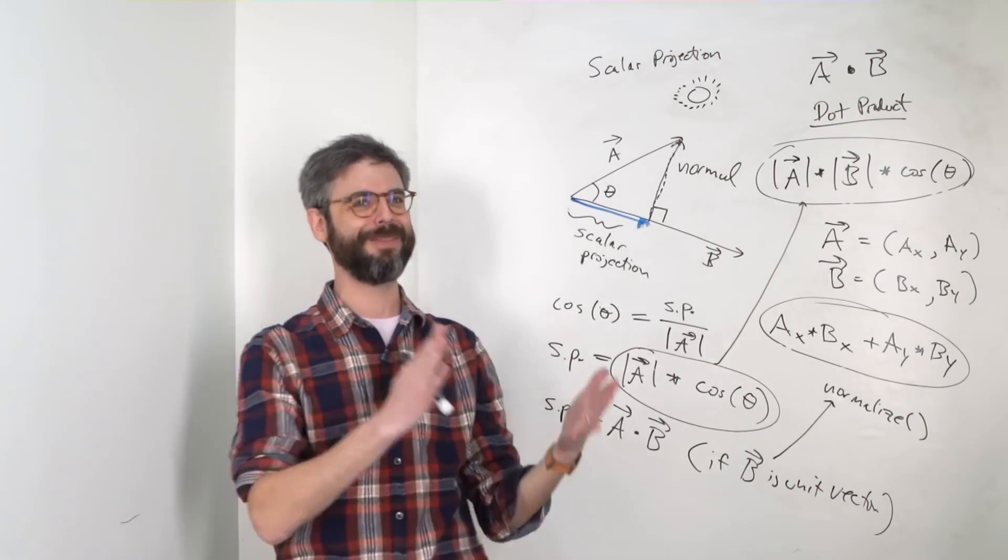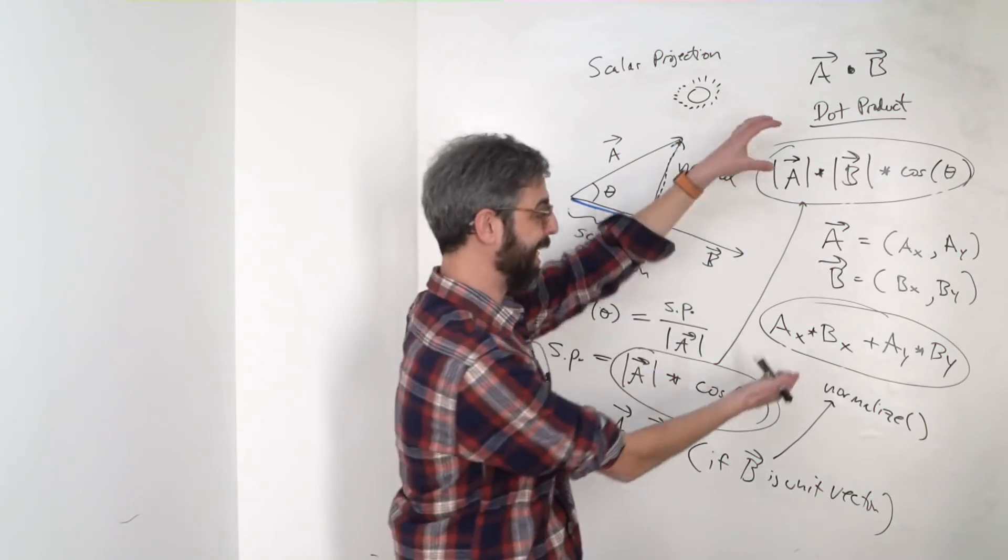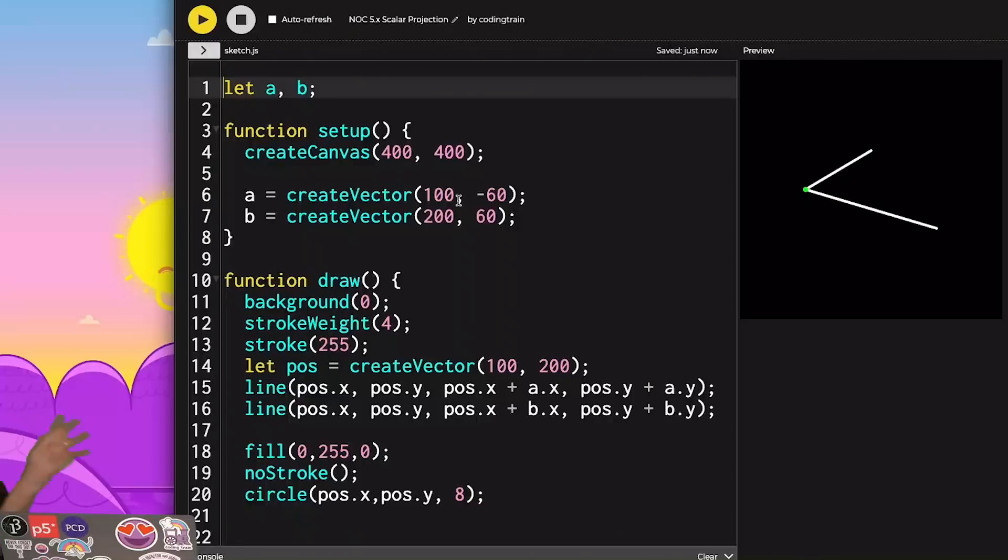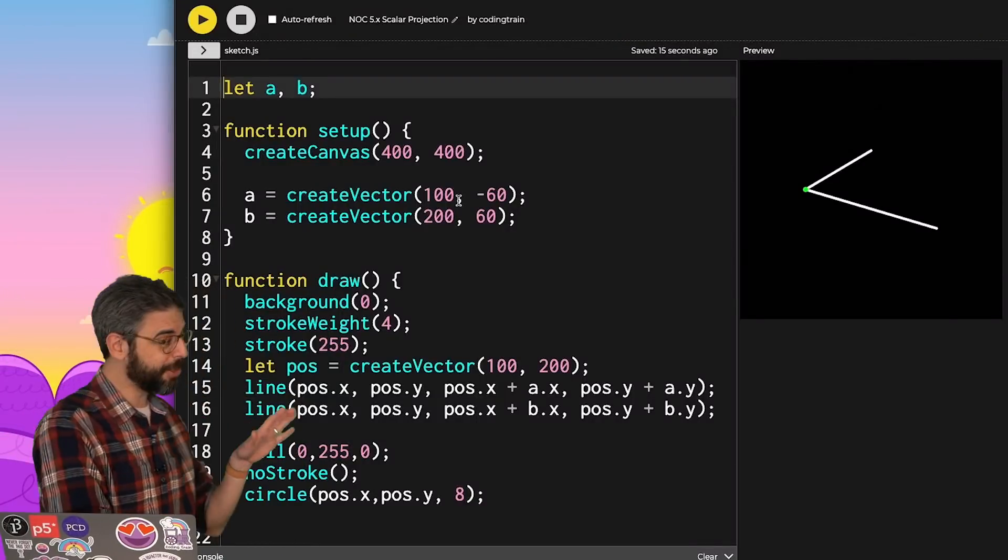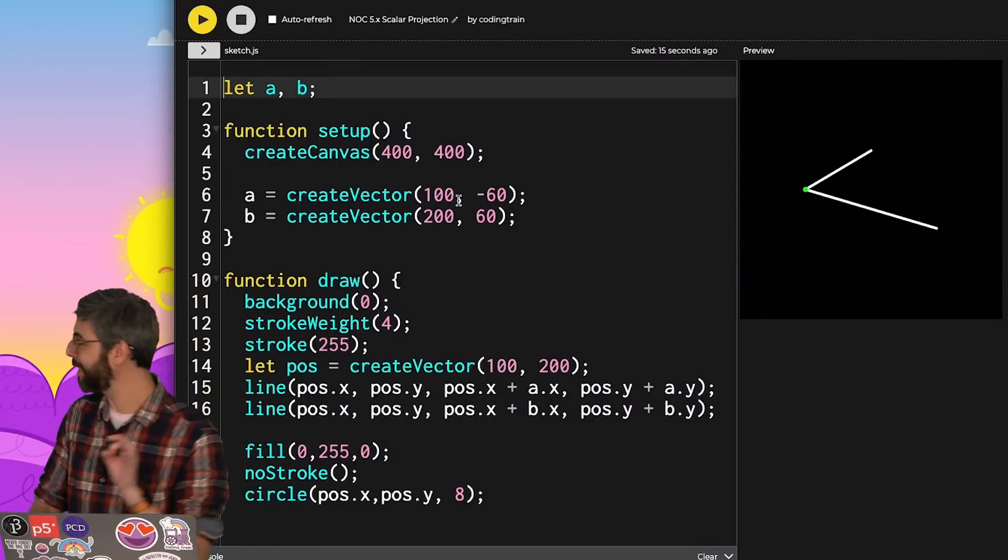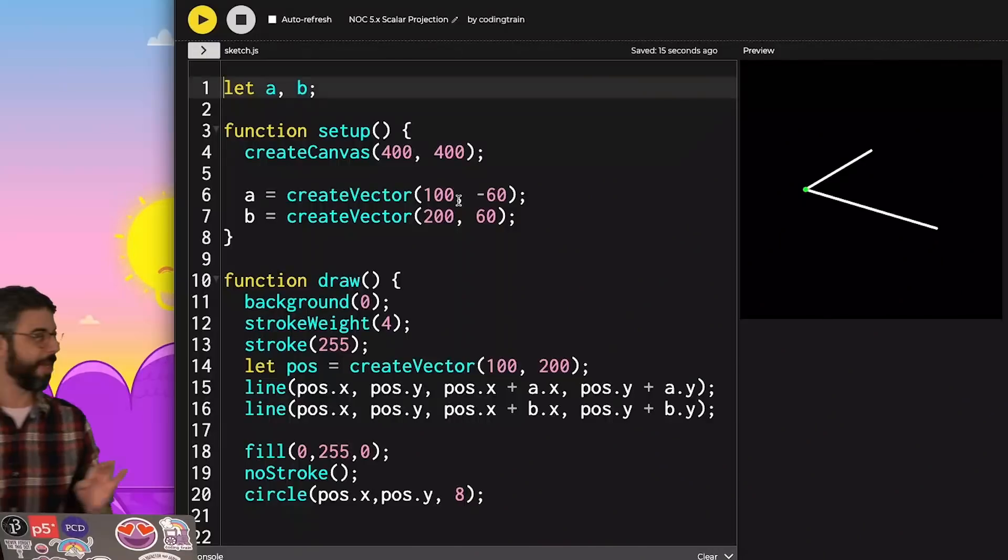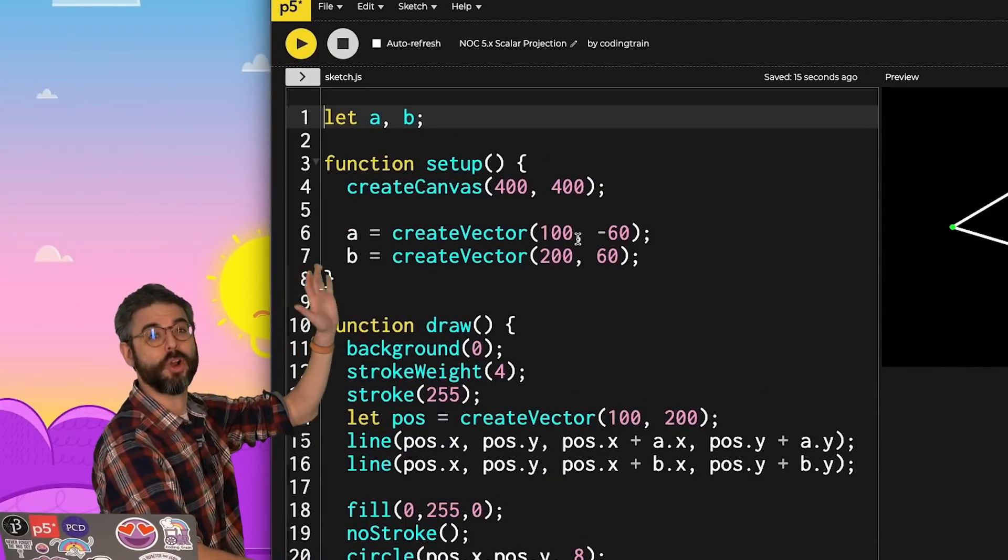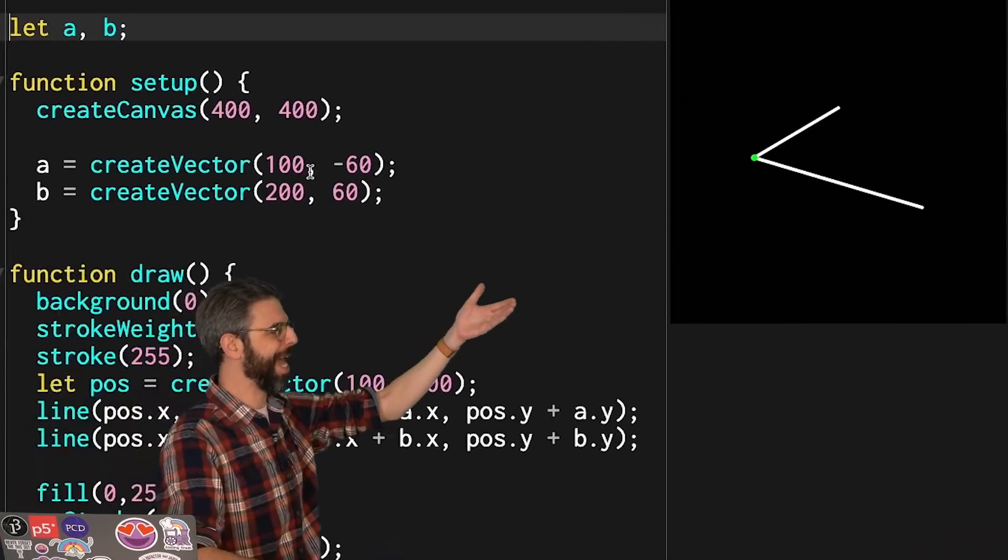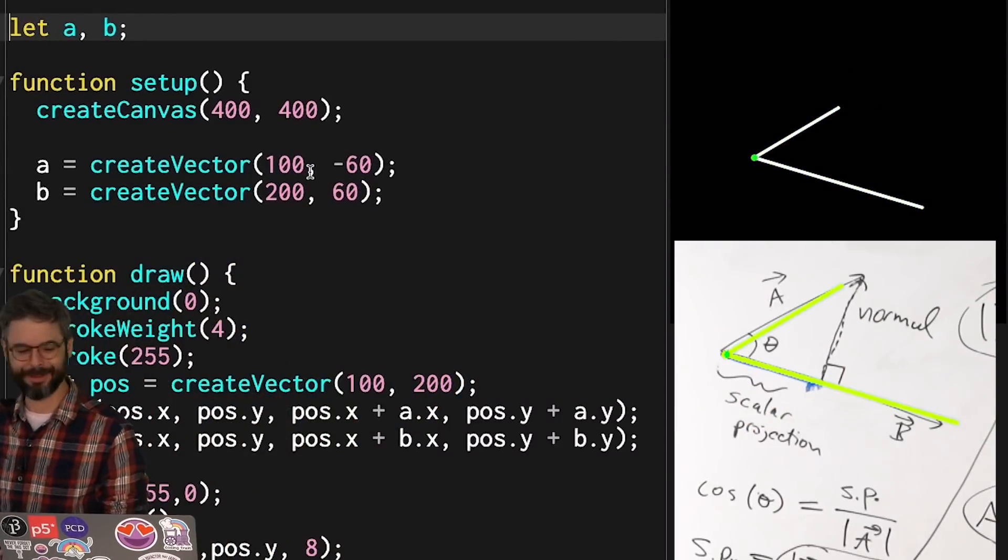You don't need to because there's the P5 angle between function that does that math, but you could. Let's see what this looks like in code. I'm going to start with something that closely mirrors what I've drawn. I have two vectors A and B and I've picked somewhat arbitrary numbers for them, but I'm trying to match the visual to what I have on the board.